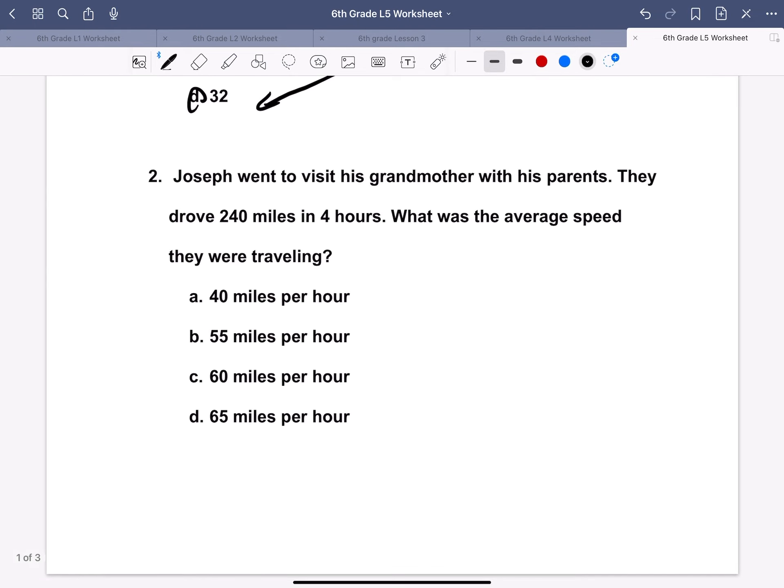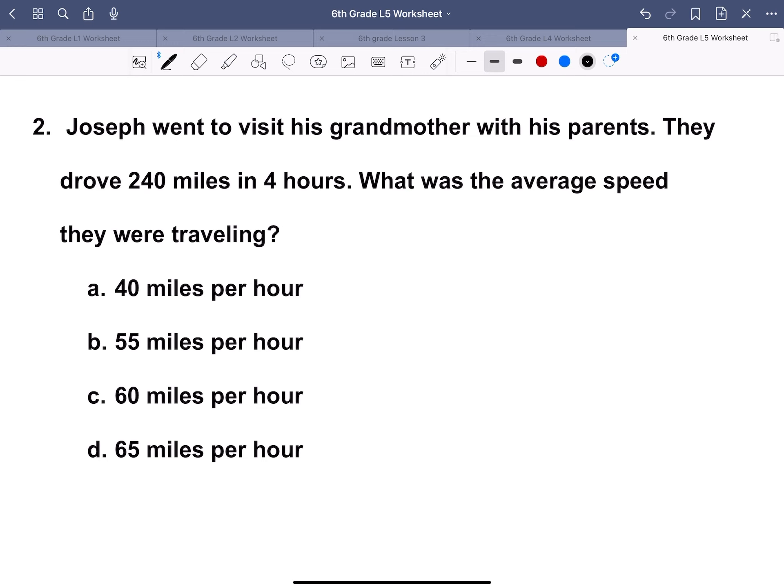Joseph went to visit his grandmother with his parents. They drove 240 miles in four hours. What was the average speed they were traveling? To find the average speed, we just have to get the number of miles over the number of hours. If we divide 240 by 4, we get 60 miles per hour. That is C in this case.